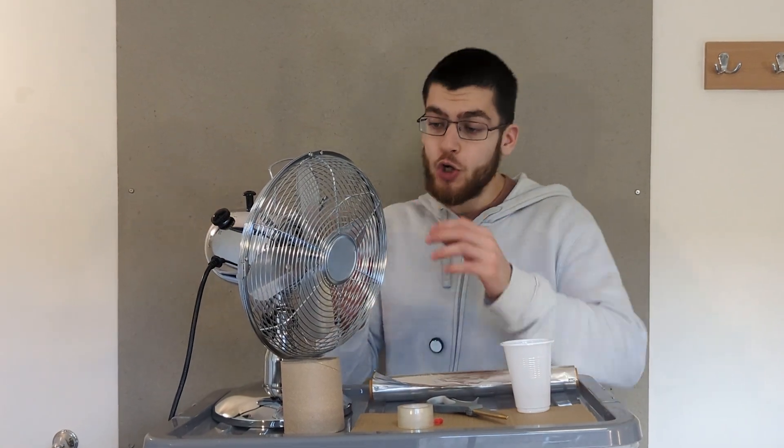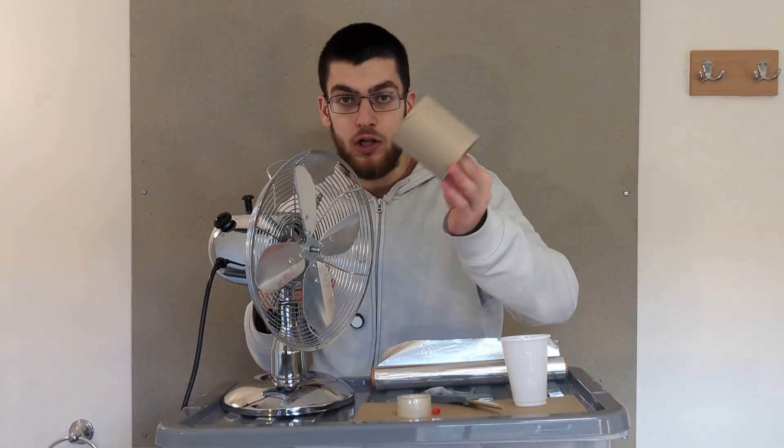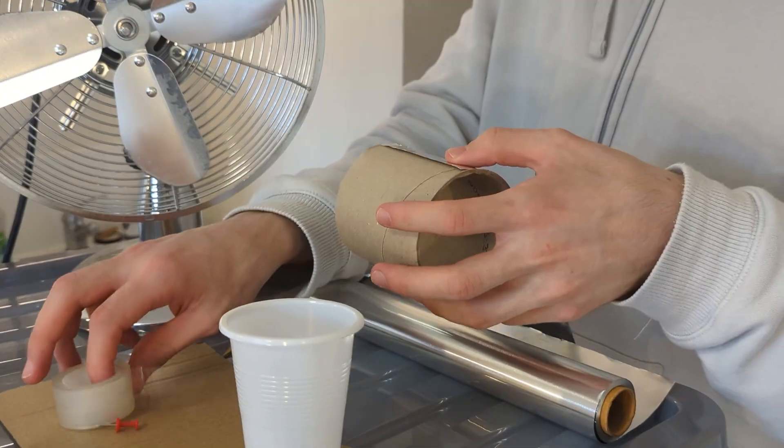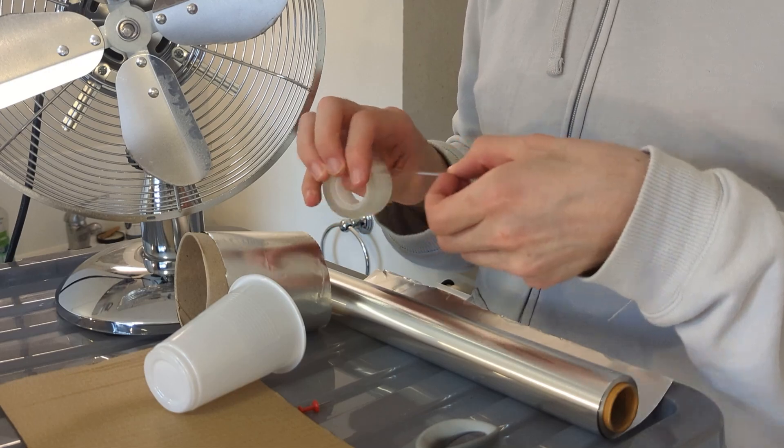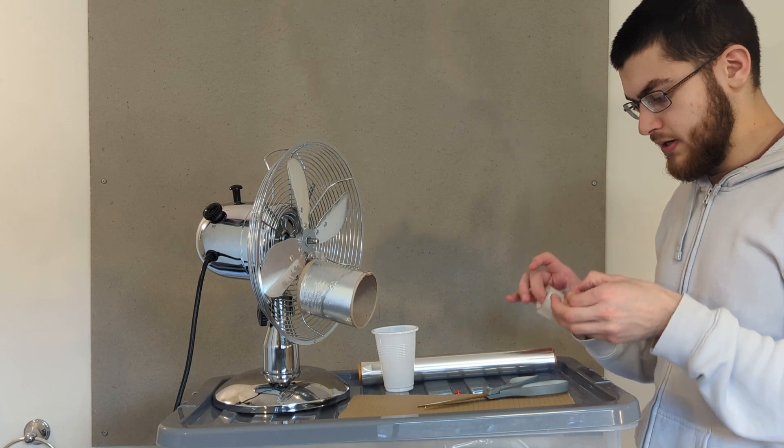First I'm going to remove the cover from this fan. Then I'm going to take some tinfoil and tape it to my toilet roll. Now I'm going to tape the tinfoil roll to my fan. Now we have some spinning tinfoil.